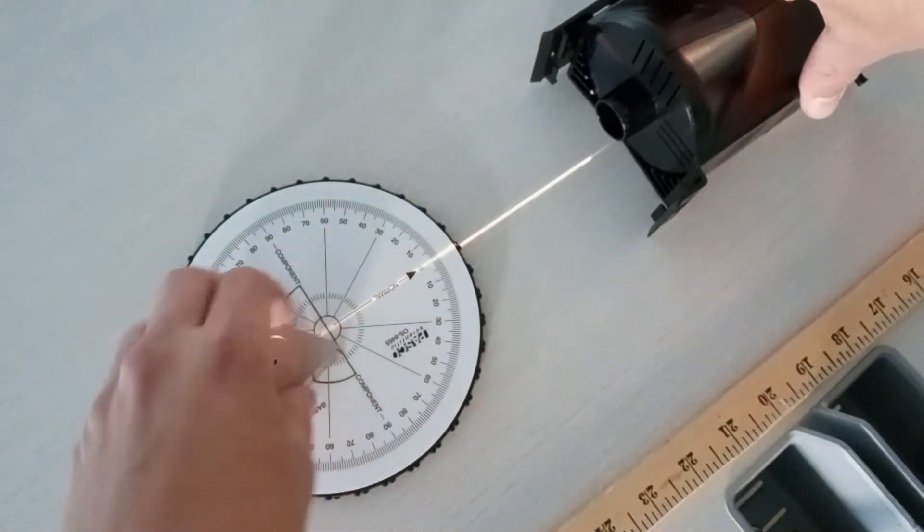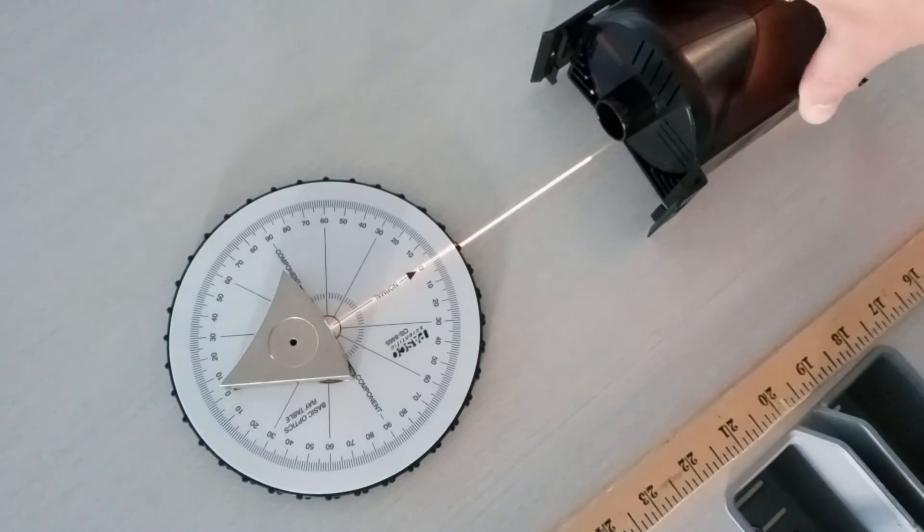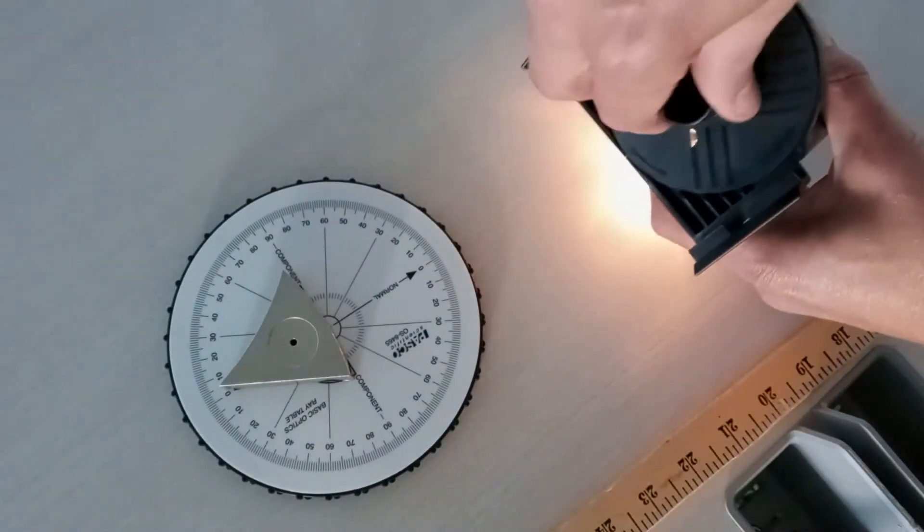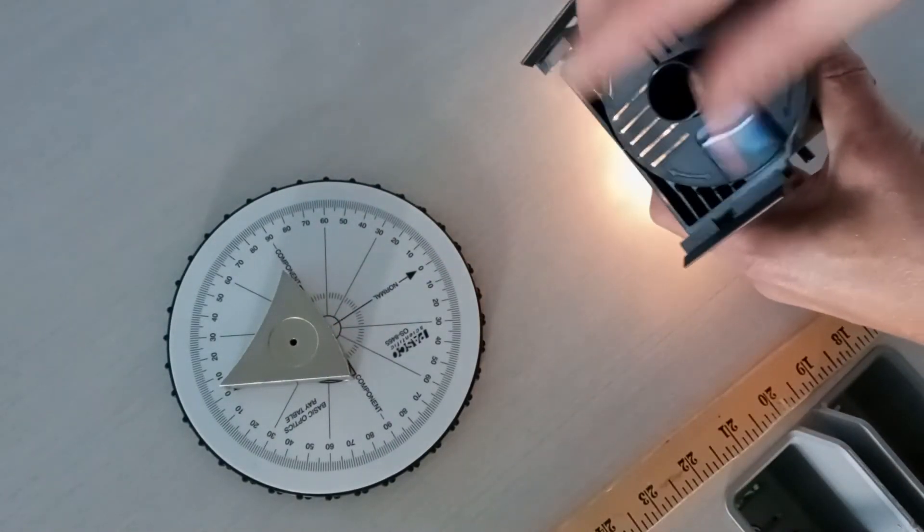We can determine the radius of curvature of the concave and convex sides of the mirror by projecting parallel light beams and looking at where the beams converge.